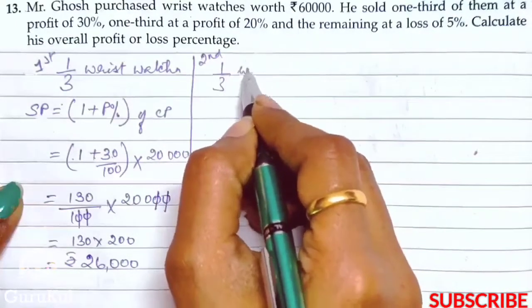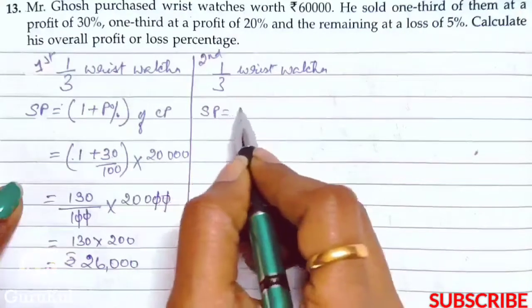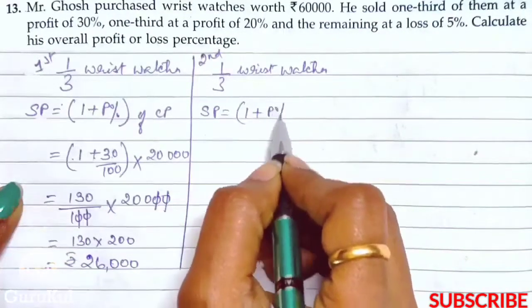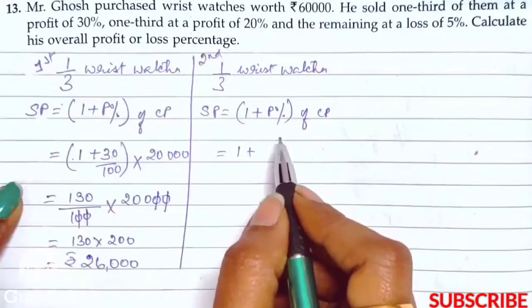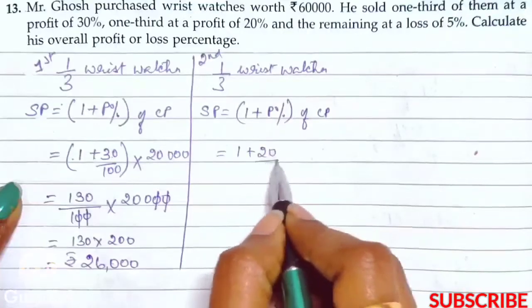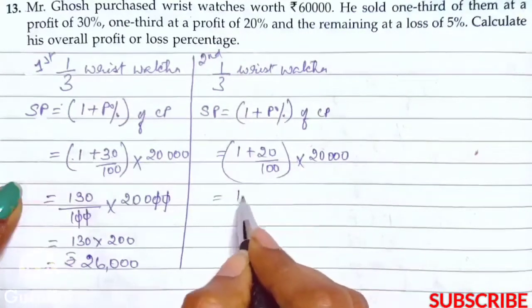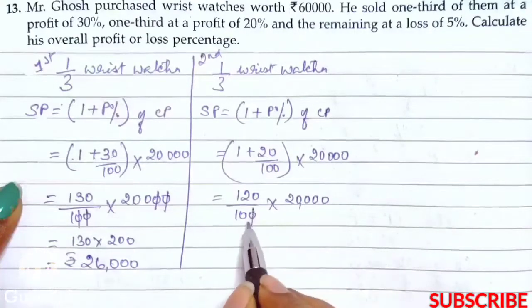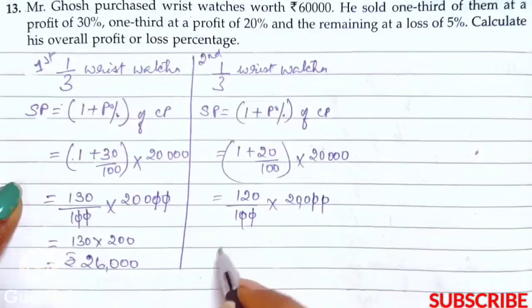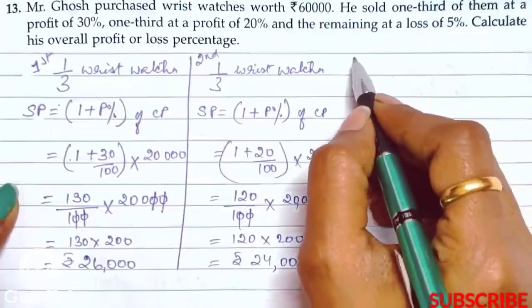Now for the second one-third wristwatches, SP = (1 + 20/100) × 20,000 = 120/100 × 20,000 = 120 × 200 = rupees 24,000.